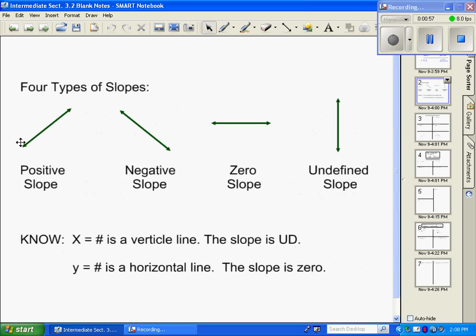There's four types of slope. There's a positive slope, there's a negative slope, a slope of zero, and a slope of undefined.